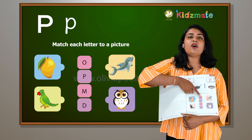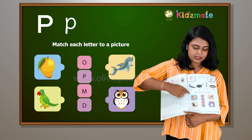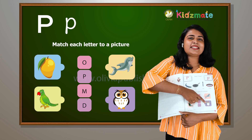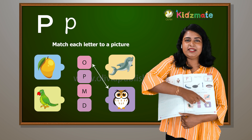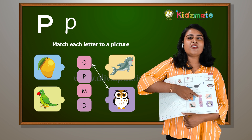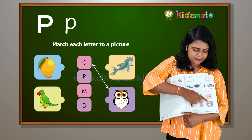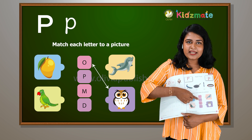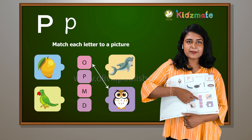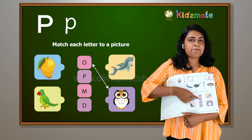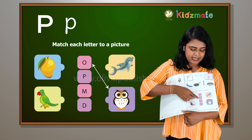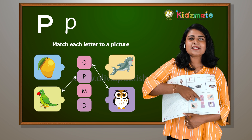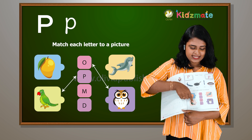You have the letter O. O — which word is starting with O? O for owl. Do you remember? O for owl. Then which letter is this? You have the letter P. P for parrot. P for parrot. Yes.